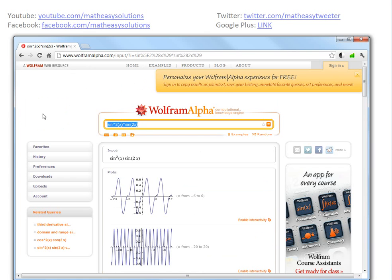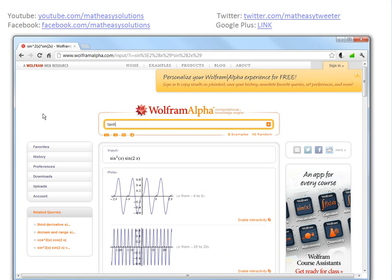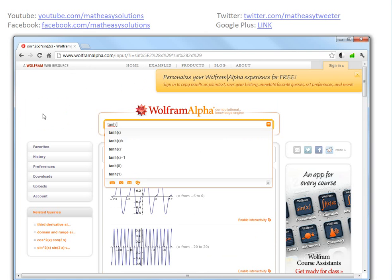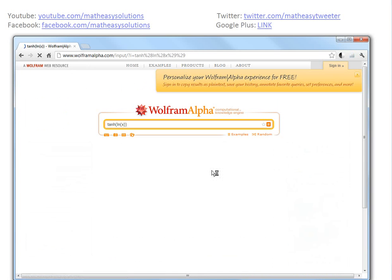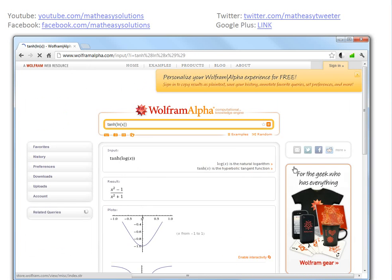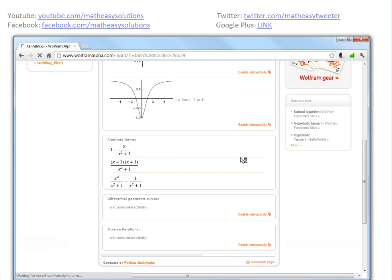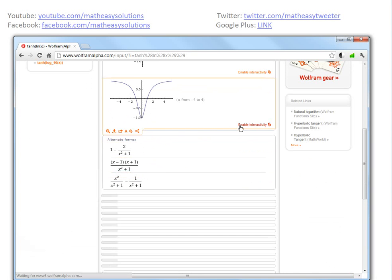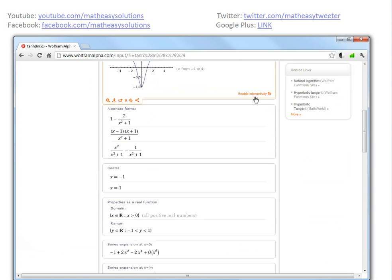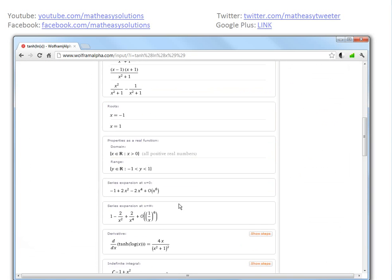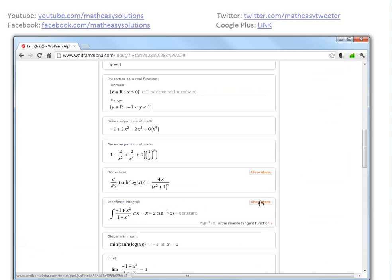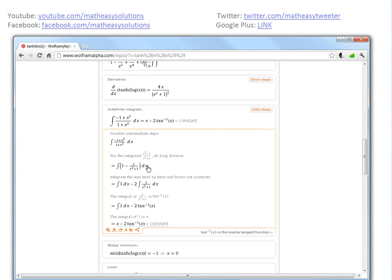And you can also do complex ones, let's say, hyperbolic x with a ln x inside. I don't know what this is. So it graphs it out for you and whatnot. And then if you scroll down to the steps, it basically tells you all the steps to do this one.